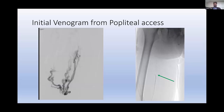I initially got popliteal access from the left — this was my initial venogram — and I thought we're going to be here for a while, so I needed to cross. Despite my best efforts, I must have spent at least an hour trying to get up, and I couldn't get beyond the proximal third of the thigh or superficial femoral vein. The patient told me others had tried in the past, so I didn't want to labor it too much.